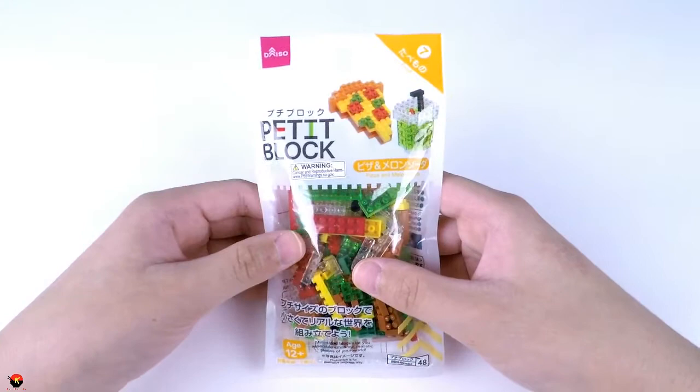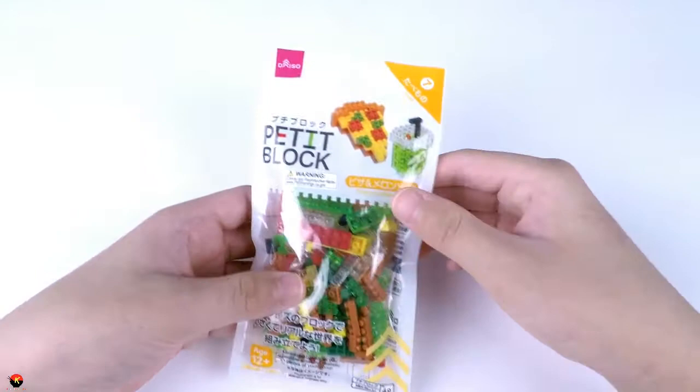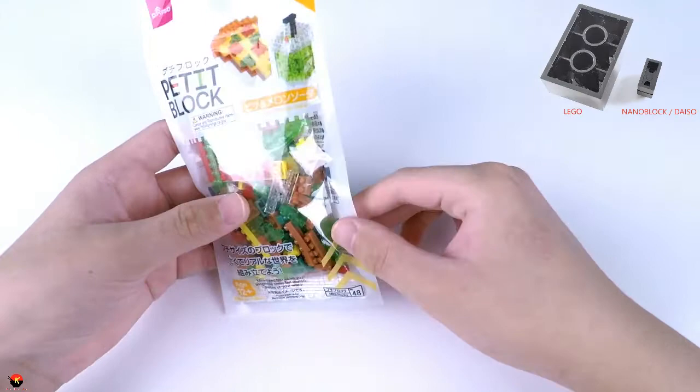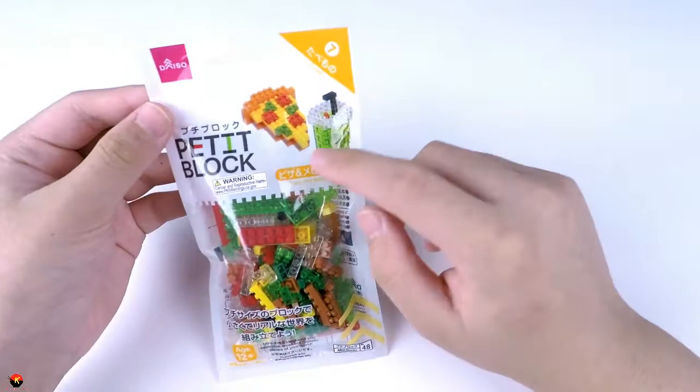If you're not very familiar with Daiso Petite Block, think of them almost as Legos but super small, just like little nano blocks. A regular Lego block would be very thick, whereas a Daiso petite block 2x4 would be very small. They all assemble to make these cool little kits here. Let's go ahead and open this.